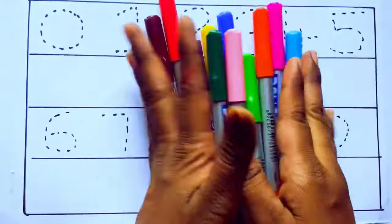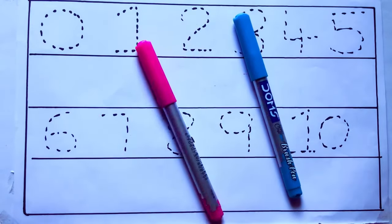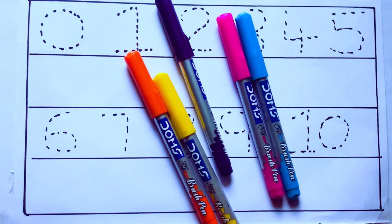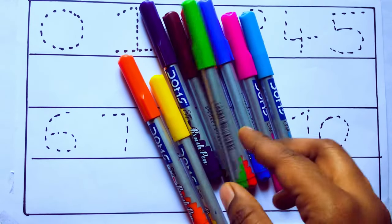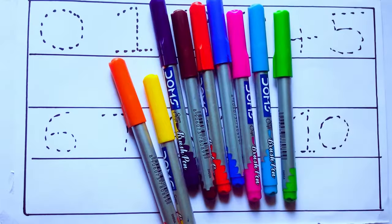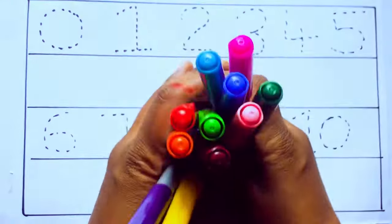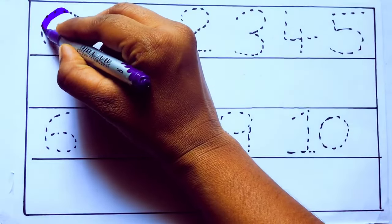These are all the color pencils. Let's learn the names: sky blue color, pink color, yellow color, orange color, violet color, blue color, brown color, red color, green color, blue green color, and pink color. Let's draw numbers.